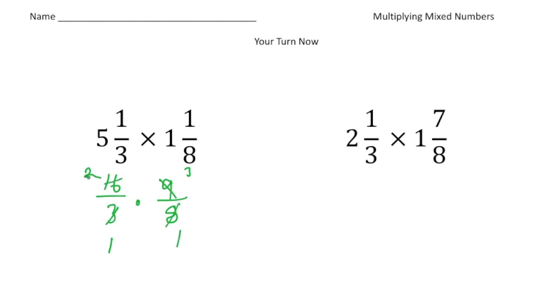So now we can multiply across, 2 times 3 gives us 6, and 1 times 1 gives us 1. And our answer is 6.